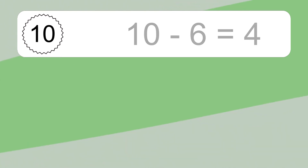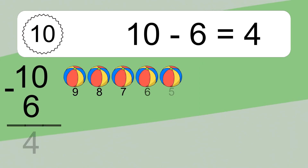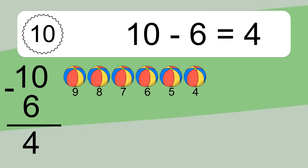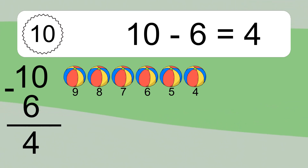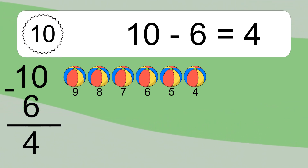10 minus 6 equals what? 10 minus 6 equals 4. Let's count it: 9, 8, 7, 6, 5, 4.